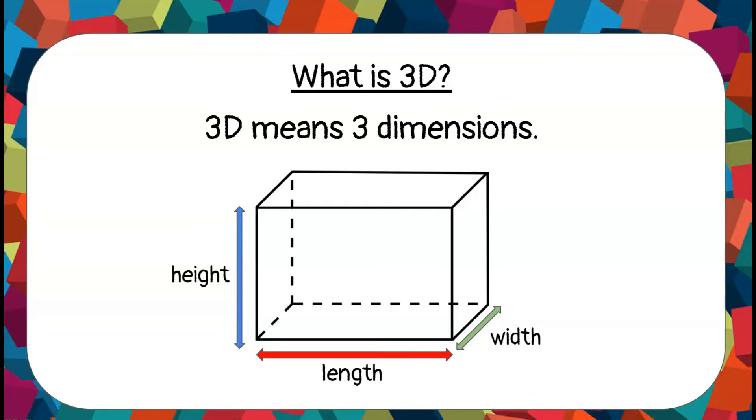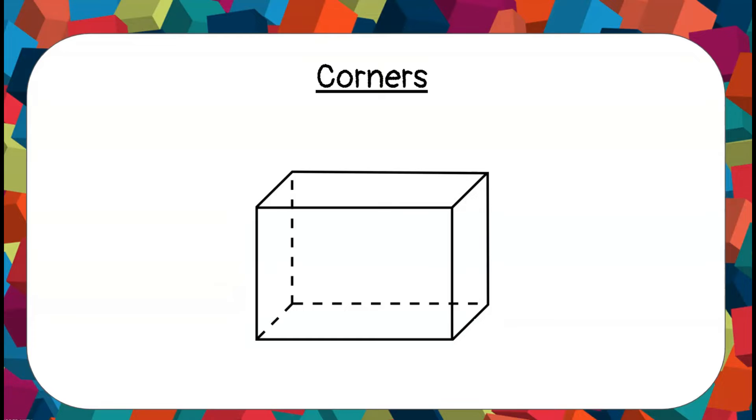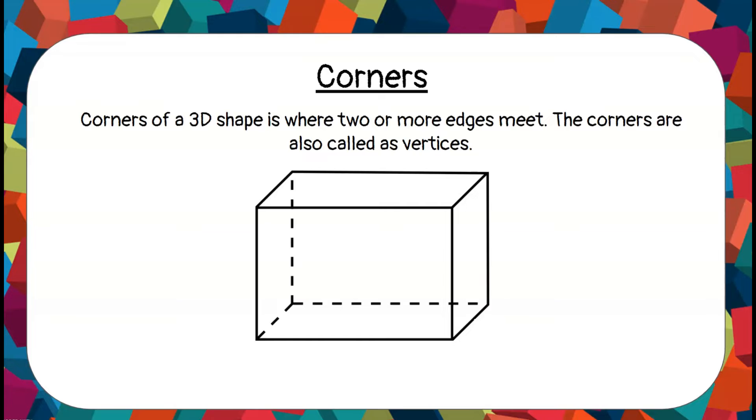Now let's learn about the corners of a 3D shape. Corners of a 3D shape is where two or more edges meet. It is a sharp point in a 3D shape. The corners are also called vertices.